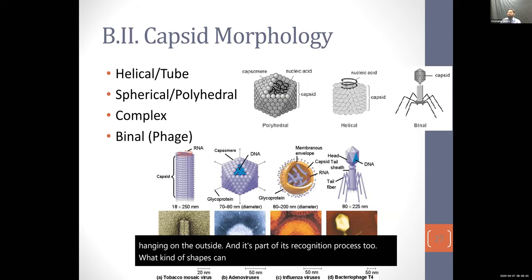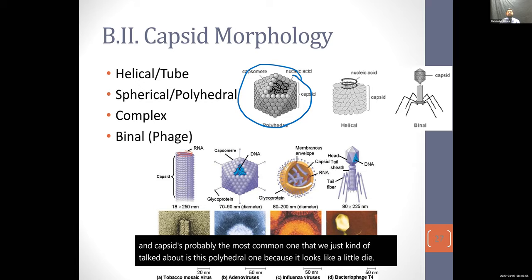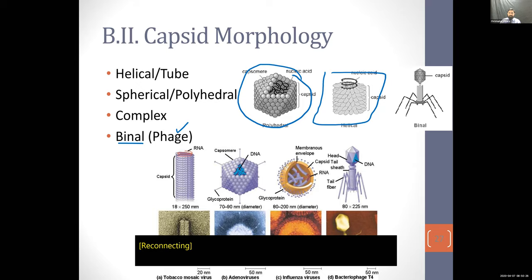The most common capsid shape is the polyhedral one, which looks like a die. Another version is helical — like a little tube or can. Then there's the phage shape, and the term 'phage' implies it infects bacteria more than anything else.